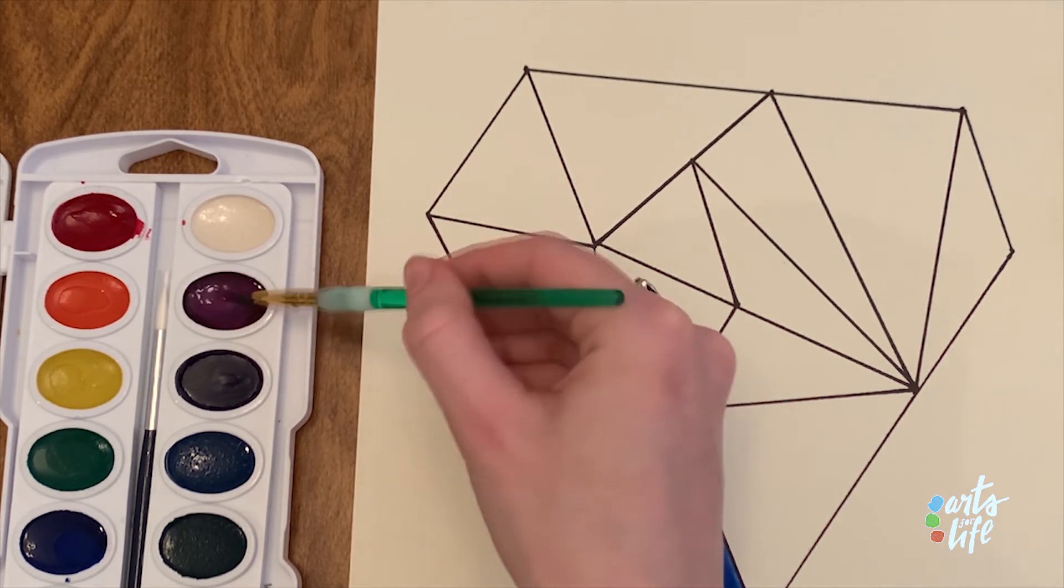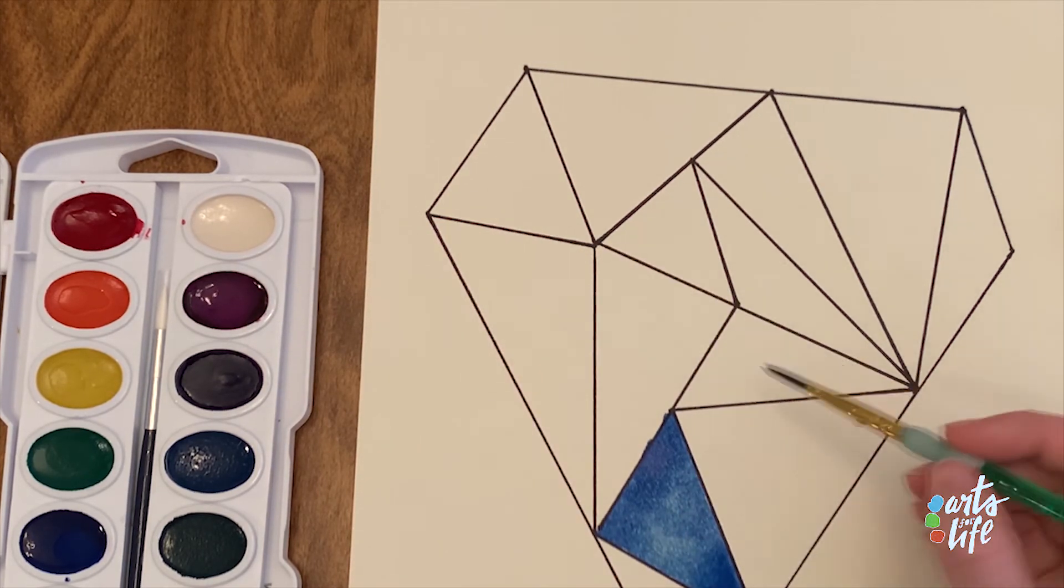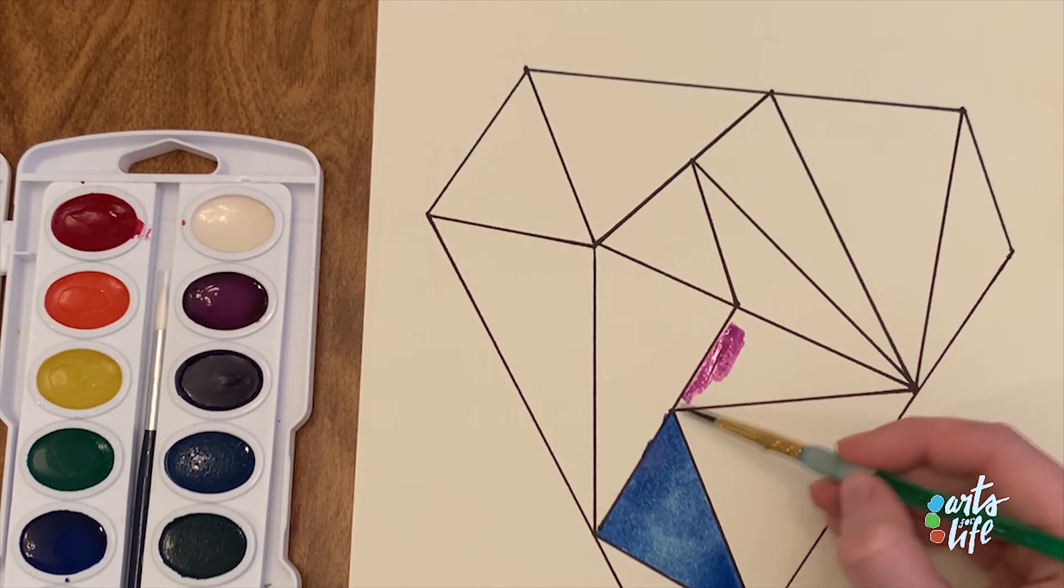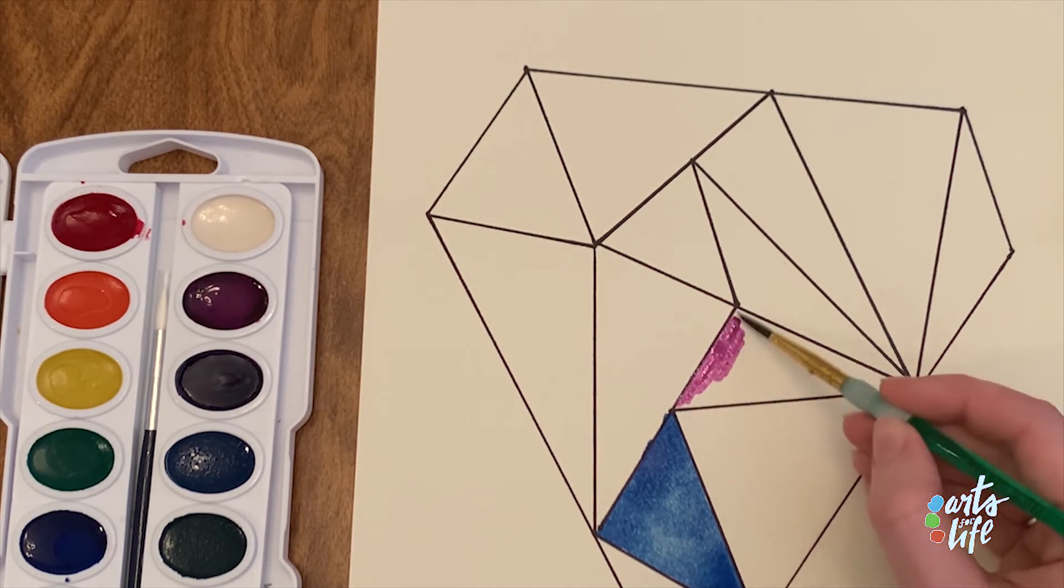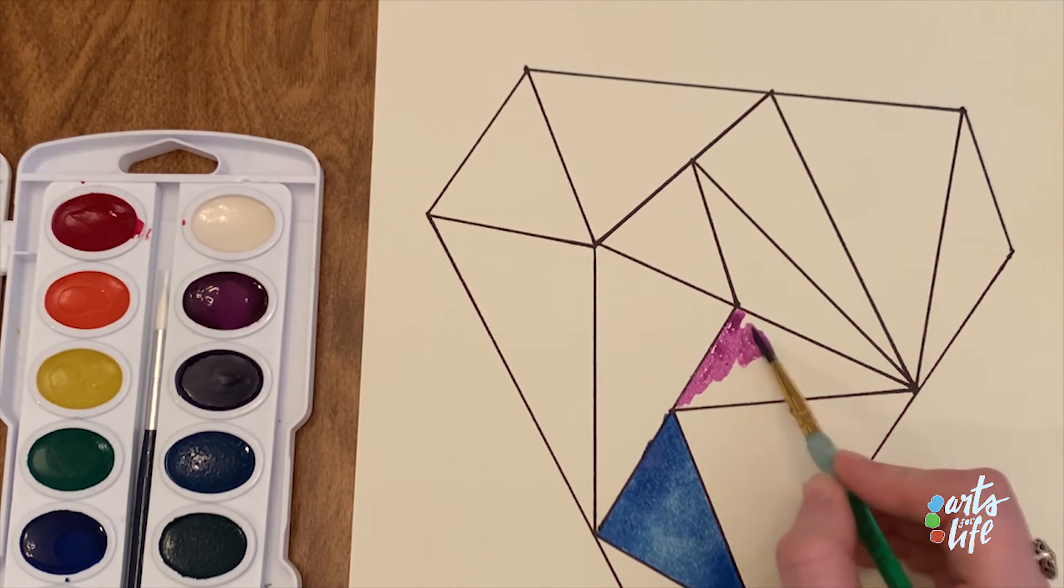So next, I think I'm going to choose, it's kind of like purplish red. Now Amethyst is another gemstone. It's more of a purple color. This one has a little bit more pink tone to it. But it's really bright and vibrant. I think it'll look nice on our gem.